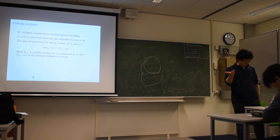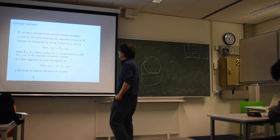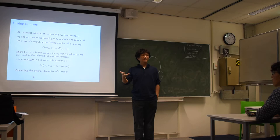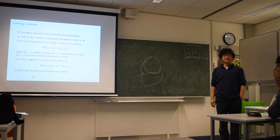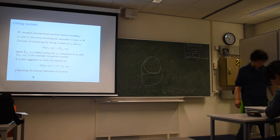The exact technical assumptions necessary for this I'll leave to the topologists to clarify. It's also suggestive to write this equality as the linking number between the two knots being d-inverse of one of the knots paired with the other one. You can think of that d-inverse in many different ways—for example, as a current, a distribution-valued differential form. Then this surface with boundary will represent this current, and you can think of it as a product of currents.